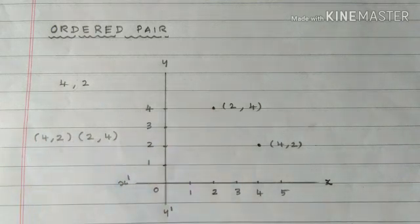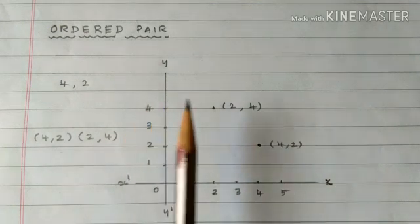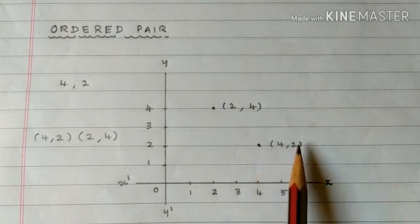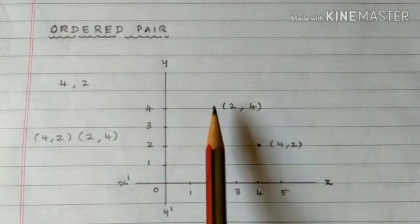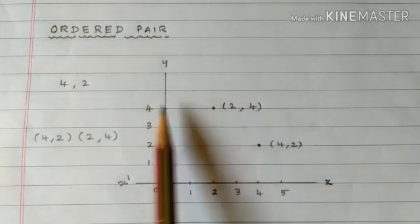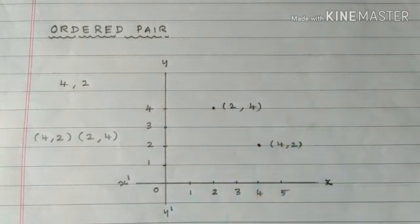Now (4, 2) and (2, 4) are two ordered pairs. The elements are the same but their positions are not the same, so they are not the same ordered pair. In the graph, for point (4, 2), 4 is the x-coordinate and 2 is the y-coordinate; for point (2, 4), 2 is the x-coordinate and 4 is the y-coordinate. From the graph it is clear that these two points are not the same, and likewise these two ordered pairs are also not the same.